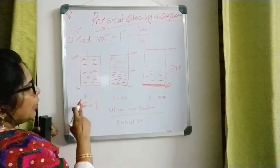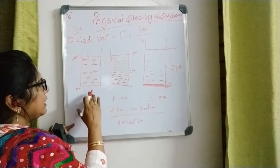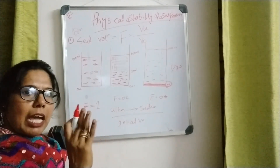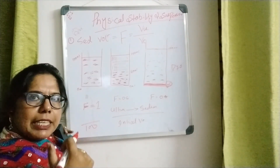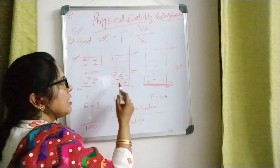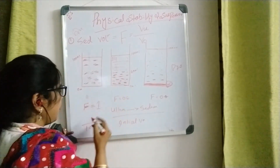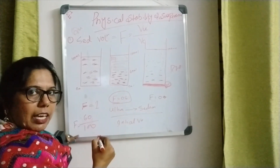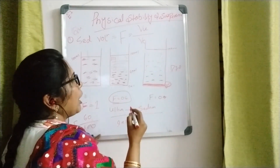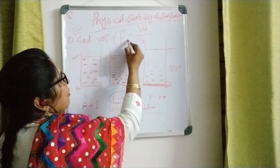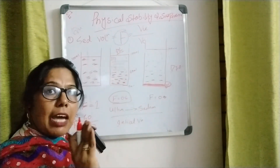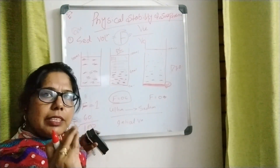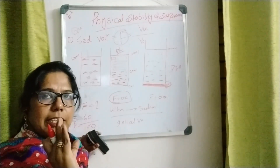Here we say the F value — the sedimentation volume — is dimensionless, meaning it doesn't have any unit, not in ml or grams or anything. This sedimentation volume is dimensionless and has no units.